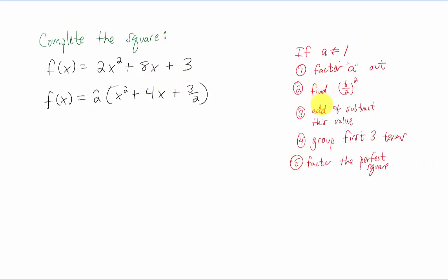The rest of our steps are going to be exactly the same from that point, except we're going to leave this 2 outside of the parentheses the whole way. Our b over 2 squared is going to be 4 over 2 squared. That's going to be 4. I'm going to copy our whole quadratic function down, except in these parentheses here. I'm going to leave space so we can add 4 and subtract 4.